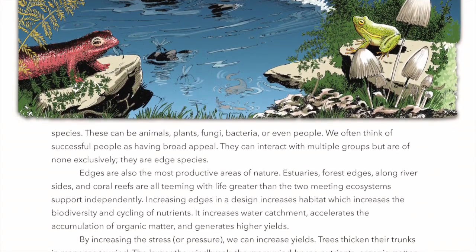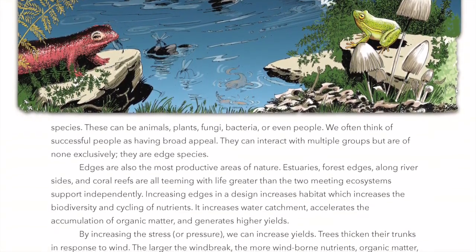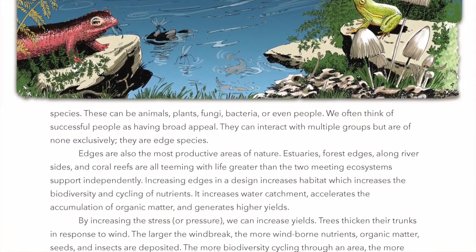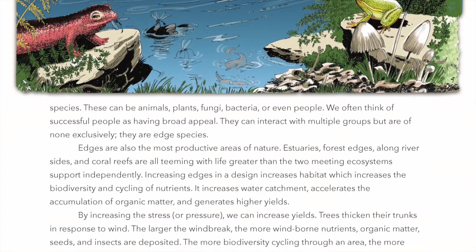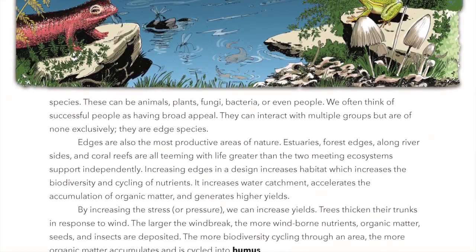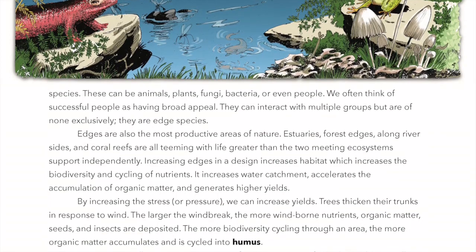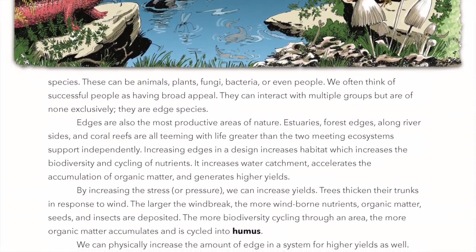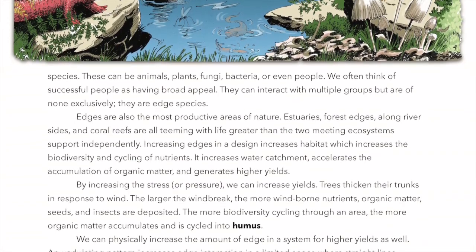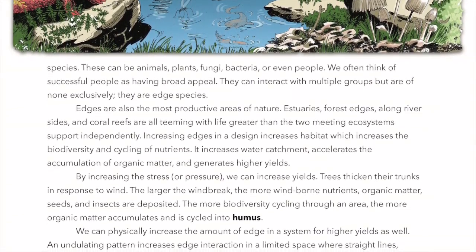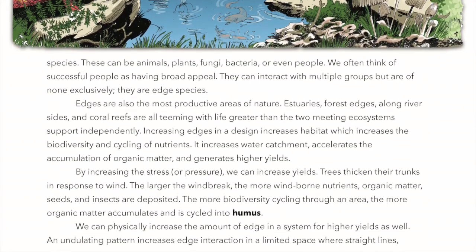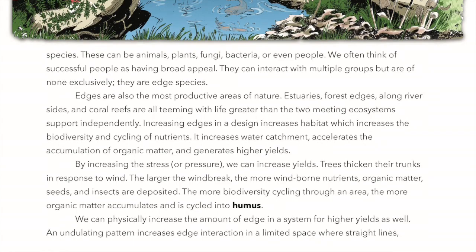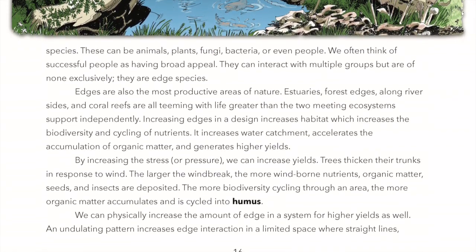Increasing edges in a design increases habitat, which increases the biodiversity and cycling of nutrients. It increases water catchment, accelerates the accumulation of organic matter, and generates higher yields. By increasing the stress or pressure, we can increase yields. Trees thicken their trunks in response to wind. The larger the windbreak, the more windborne nutrients, organic matter, seeds, and insects are deposited. The more biodiversity cycling through an area, the more organic matter accumulates and is cycled into humus.